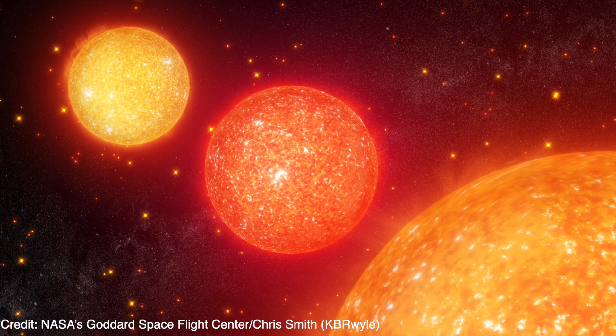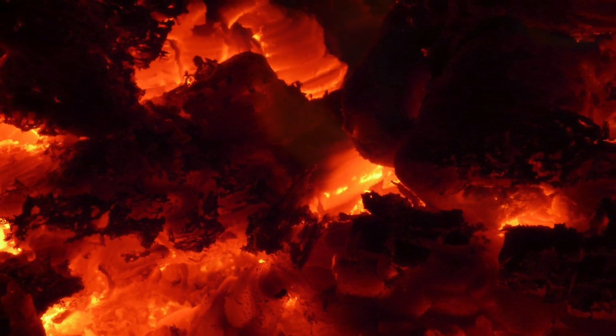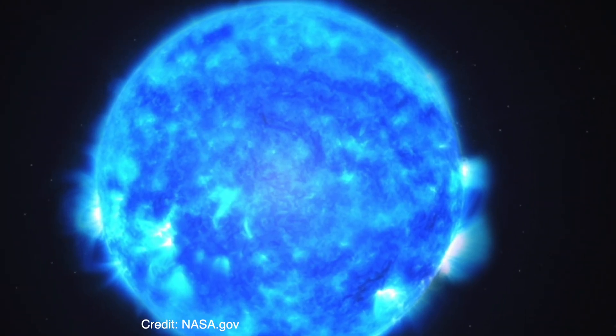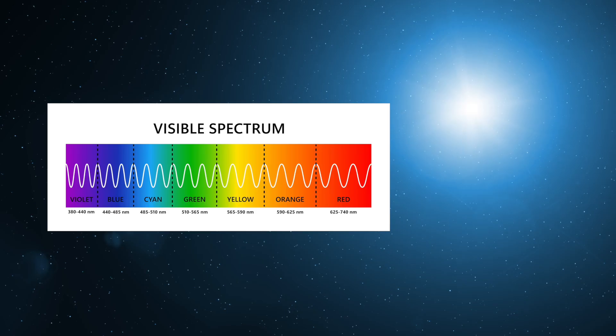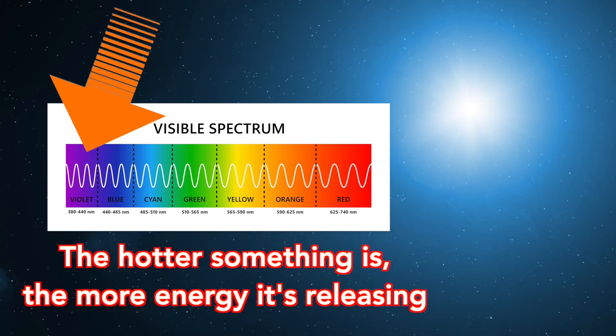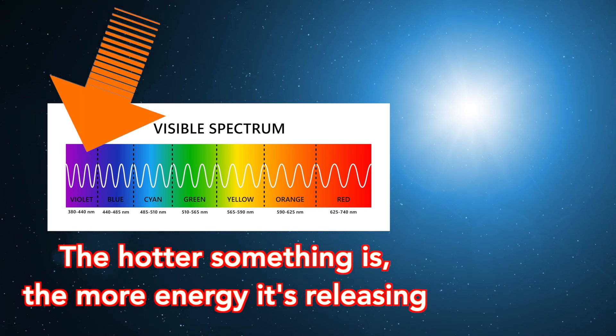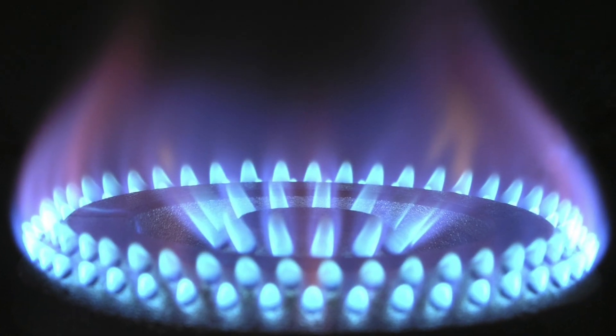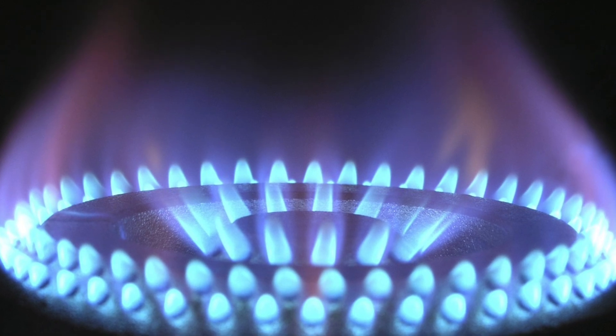So a red giant star is fairly cool for stars, similar to the embers of a dying fire. And blue supergiants burn hot and fast. This makes sense because the hotter something is, the more energy it is releasing. And violet is the highest energy wavelength of visible light. The same is true for fire — blue fire is hot fire. But honestly, all fire is too hot for me, so I'm going to stay back no matter what the color.